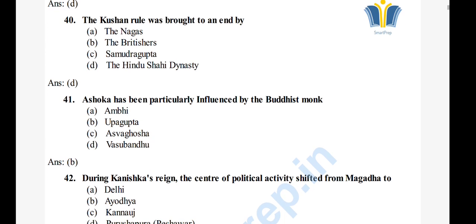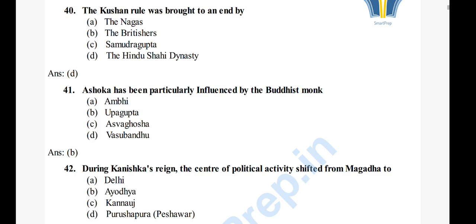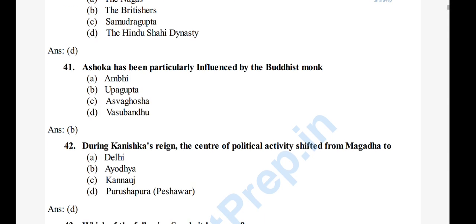Question 42: During Kanishka's reign, the center of political activity shifted from Magadha to — A) Delhi, B) Ayodhya, C) Kannauj, D) Purushapura (Peshawar). The right answer is option D, Purushapura.